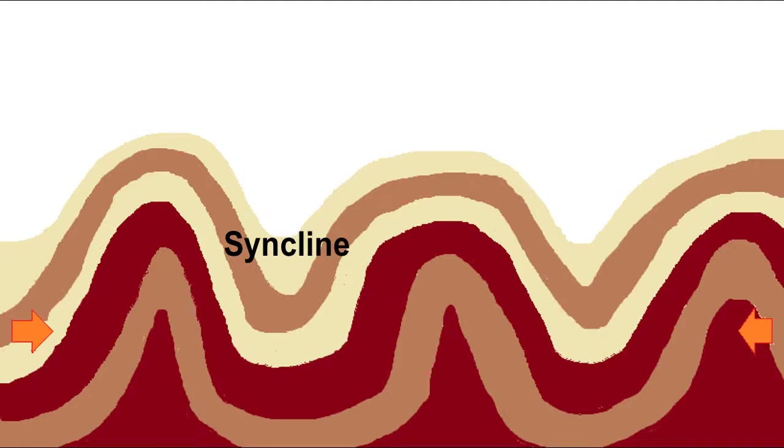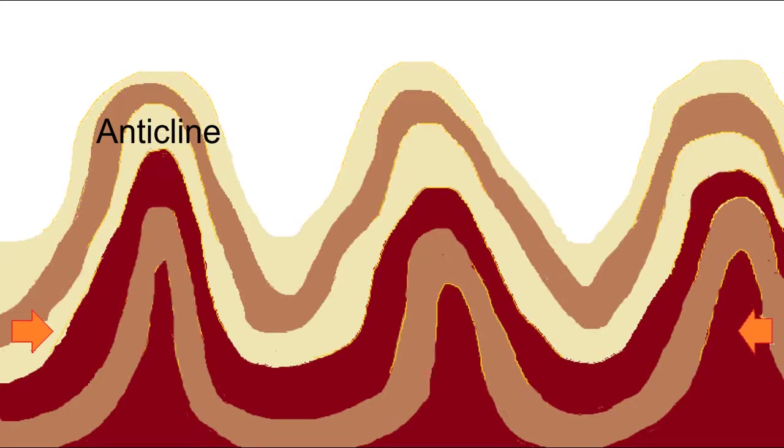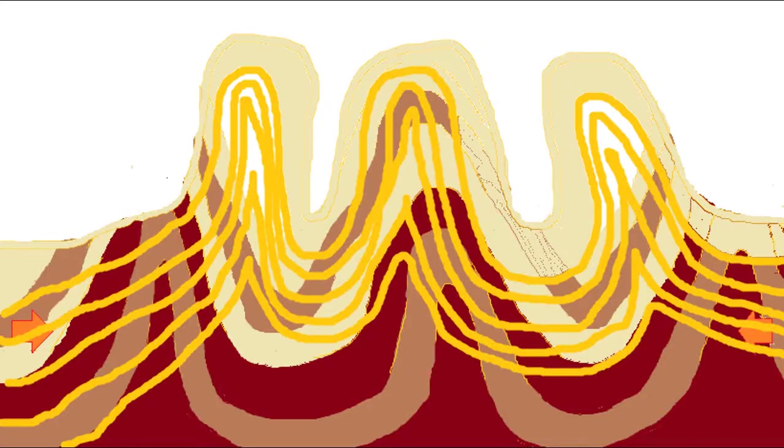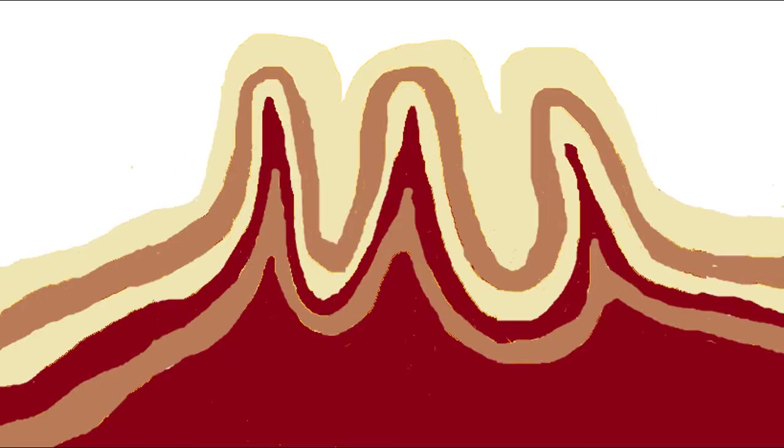The syncline is the base or trough of the fold, and the anticline is the top of the fold. As the plates continue to push towards each other, the anticlines and synclines get steeper and gradually closer together until the strata are almost running vertically parallel to each other.